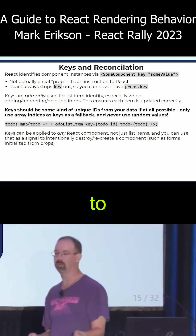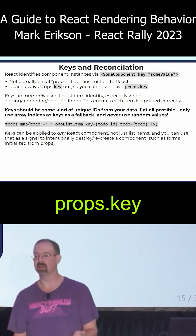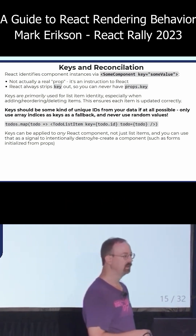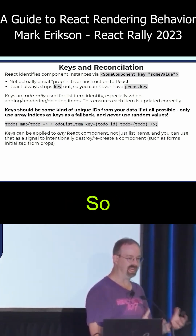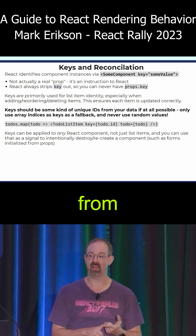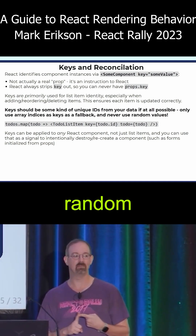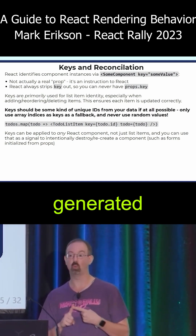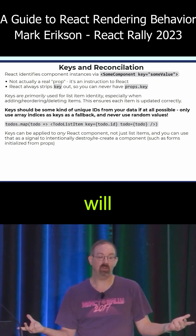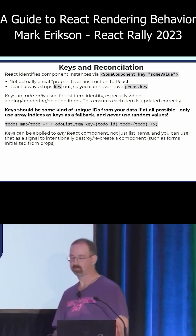Keys are really instructions to React. In fact, you can never have props.key, because React will actually strip that off every time. Keys should really be, ideally, unique values coming directly from the data itself. Never ever use random numbers generated while rendering as keys, because those will always be different and cause React to destroy that data and recreate it.